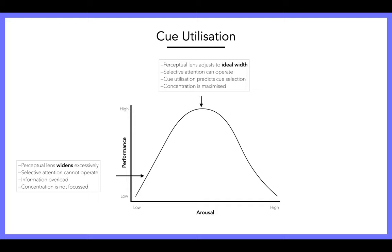Similarly to the inverted U theory, as arousal gets higher, there's a dip in performance. Cue Utilization says the perceptual lens continues to narrow, but excessively — you're actually just focused on one thing, something that might have bugged you in the game. Someone might put a challenge on you and all you can focus on is getting them back, and then you're no use to your teammates. Selective attention cannot operate. This is called hypervigilance and panic — some people get over-aroused, they're too motivated. They get the ball in a basketball game and quickly throw it, and someone intercepts because they've just panicked.